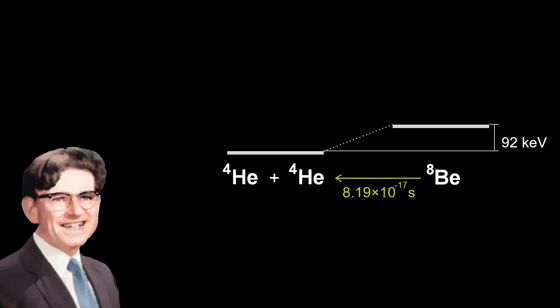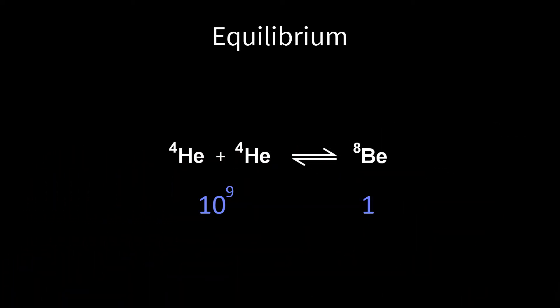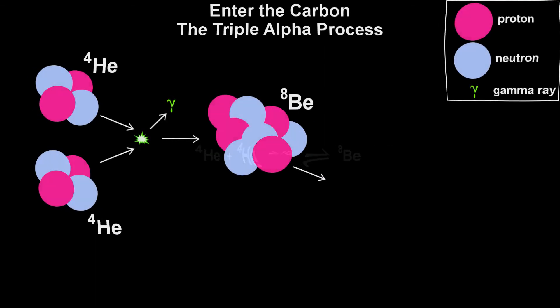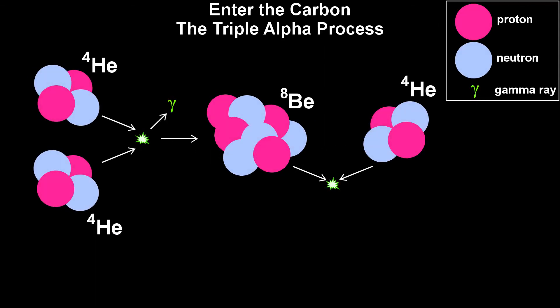Beryllium-8 is highly unstable, and it decays back to two alpha particles with a half-life of about 10 to the negative 16 seconds. The resonance is enough to make an equilibrium concentration of beryllium-8. Salpeter argued that this permanent presence of beryllium-8 nuclei allowed them to fuse with further alpha particles to make carbon.